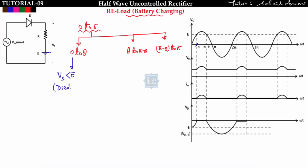Whenever the anode potential is less than cathode potential, the diode will be reverse biased. Here the cathode potential is E and the anode potential is Vs, which is less than E. So the diode is reverse biased — it is open circuited — and i_naught is zero. When i_naught is zero, the voltage drop across the resistor is zero.